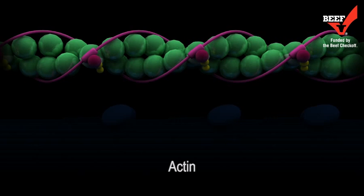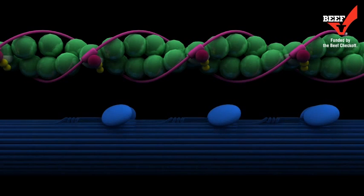Actin, commonly referred to as the thin filaments, are predominantly strands of G-actin monomers spirally coiled around one another to form a superhelix.